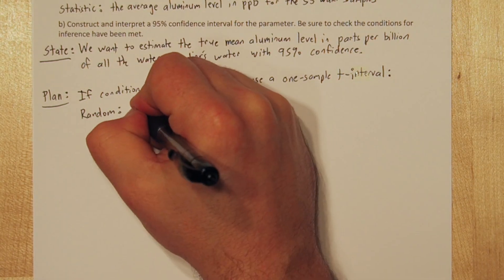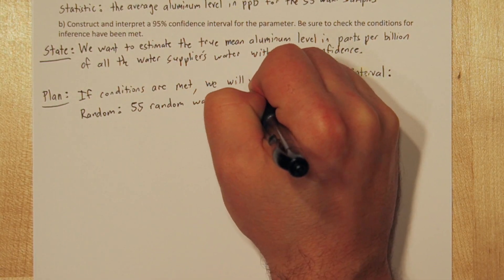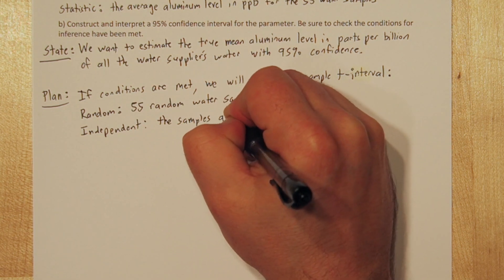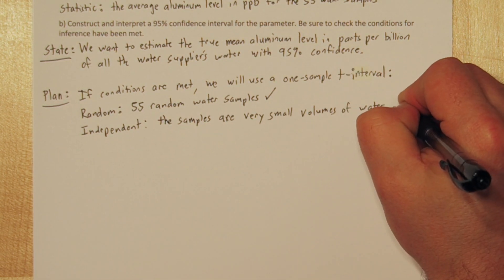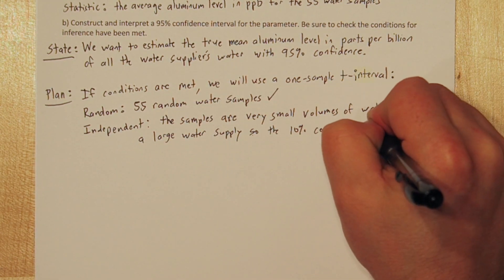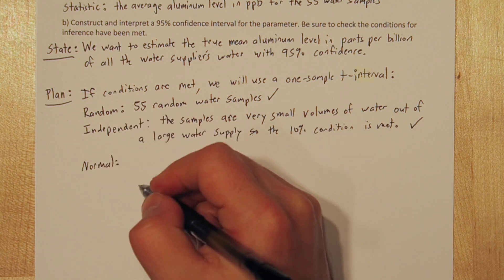The random condition: This was 55 random water samples, so that's met. Independent: The samples are very small, but technically we're sampling out of a finite amount of water, so we have to check the 10% condition. Since the samples are small and the water supply is large, the 10% condition is met.